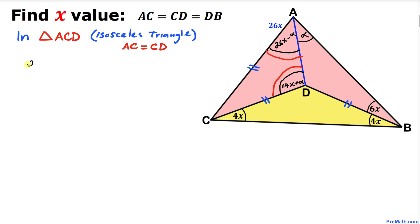Let me just write down 26X minus alpha equal to 14X plus alpha. So let me move this negative alpha on this side and move this 14X on this side.